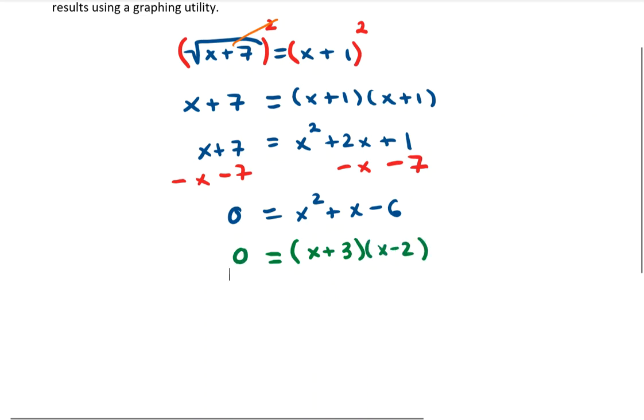Now since the left-hand side is the number 0, and the right-hand side is completely factored, the 0 product property tells us that we can set each factor equal to 0 and continue solving for x. So let's do that. x plus 3 equals 0, or x minus 2 equals 0. Alright, so we get x equals negative 3 from that first equation, and x equals positive 2 from that second equation.